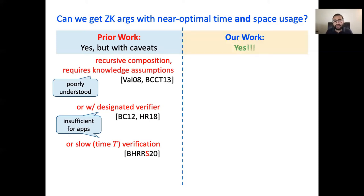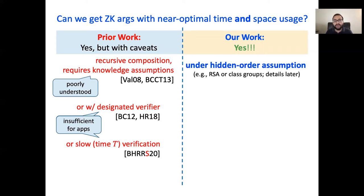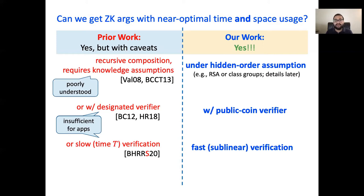In this work, we remove all these caveats at once. We need the hidden order assumption, which is comparatively much simpler and better studied. Our verifier is public coin and runs in sublinear time. In fact, such a result was not known even without the zero-knowledge requirements.